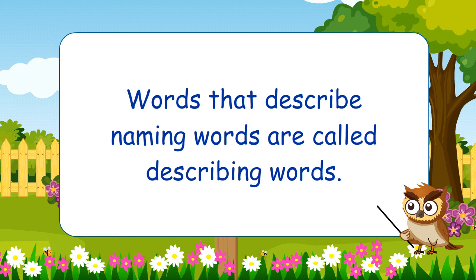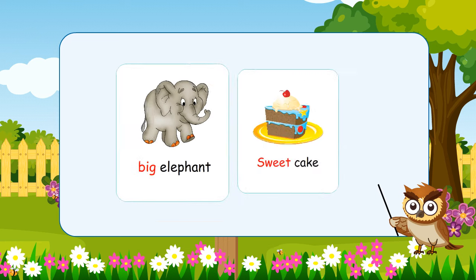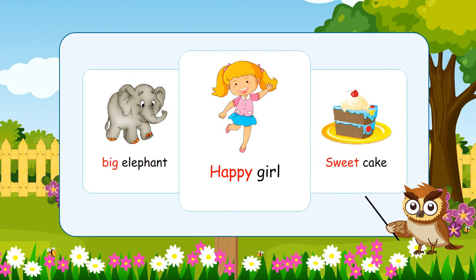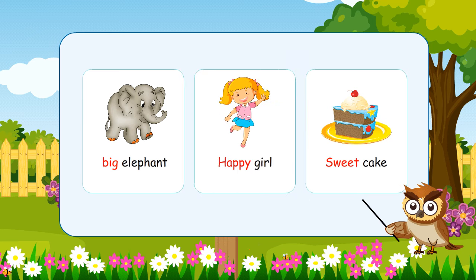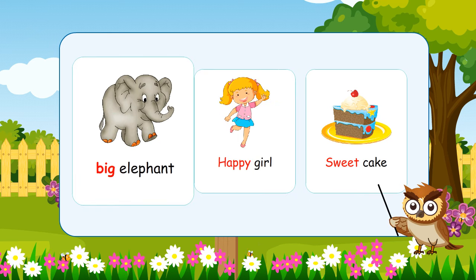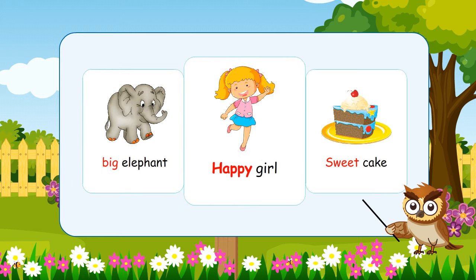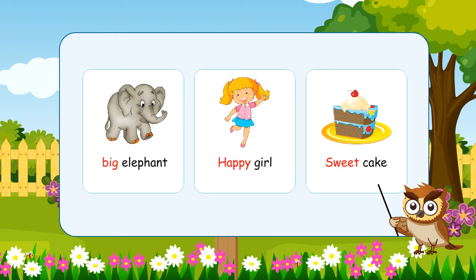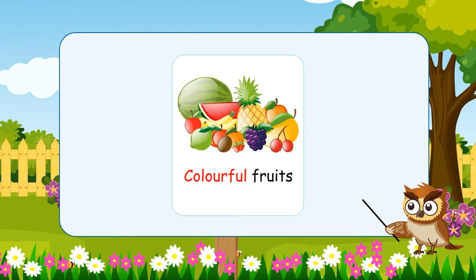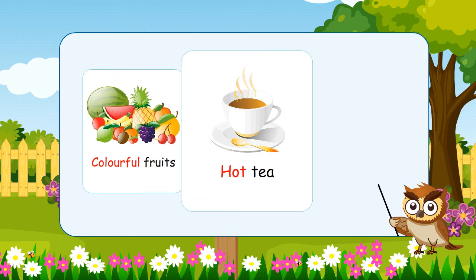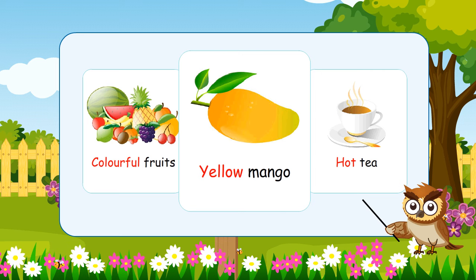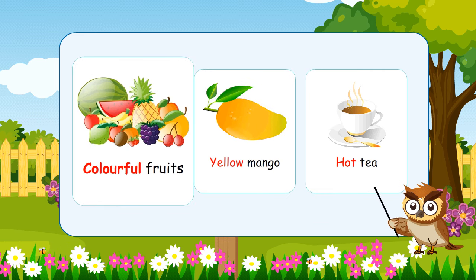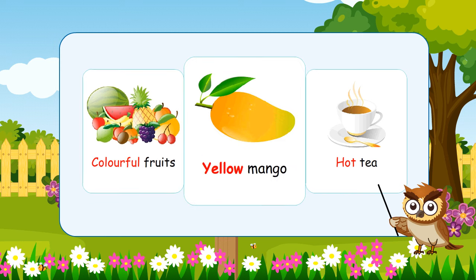Let's see some examples of describing words. Big Elephant. Sweet Cake. Happy Girl. In 'Big Elephant,' the describing word is 'Big.' In 'Happy Girl,' the describing word is 'Happy.' In 'Sweet Cake,' the describing word is 'Sweet.' Colorful Fruits, Hot Tea, Yellow Mango — the describing words are 'Colorful,' 'Yellow,' and 'Hot.' These are all some examples of describing words.